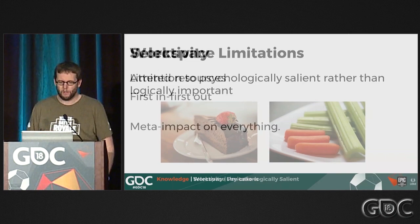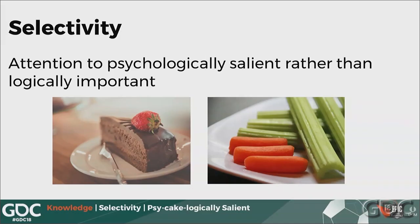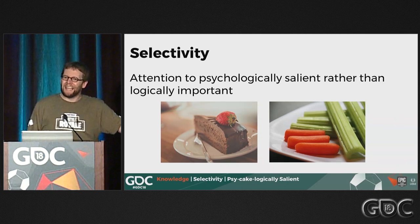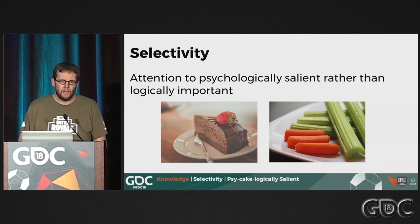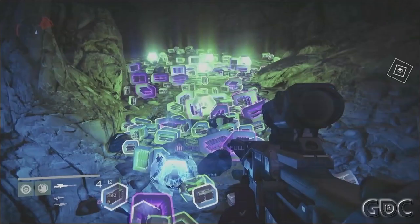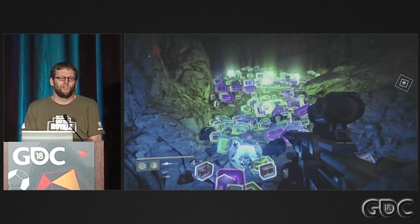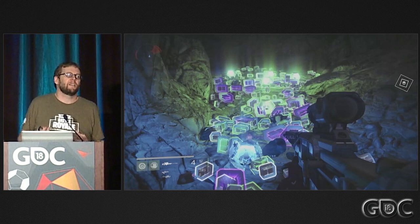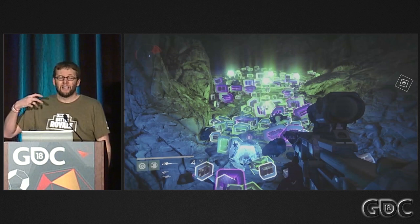The first of these areas is selectivity — attention to psychologically salient things in the environment rather than what might be logically important. A simple example: cake is way more psychologically salient and has emotion attached to it, but logically for your health it's better to eat vegetables. In games, the loot cave in Destiny was not the optimal way to get loot, but look at all that glowing loot — it's such a psychologically salient thing. Players will do grindy activities that aren't particularly fun if the psychological saliency is high enough.